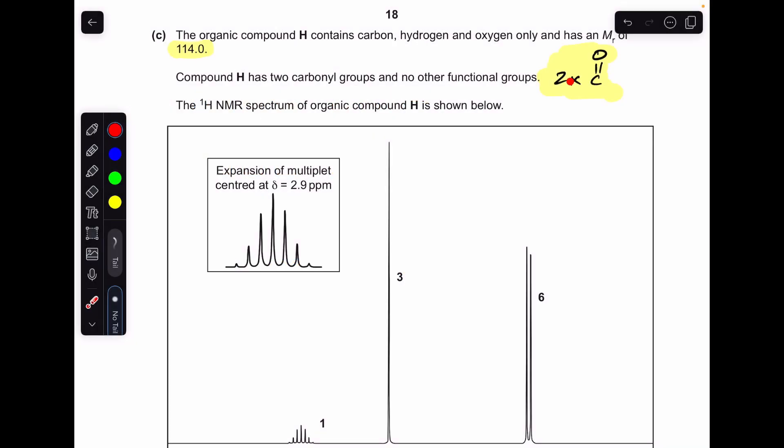Okay, so we'll make a start. I've just highlighted these two key bits of information: it's got an MR of 114 and it's got two carbonyl groups and no other functional groups.